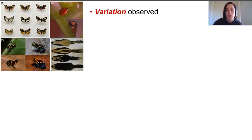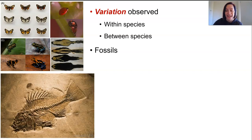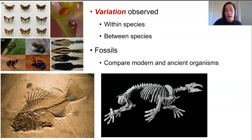Over time, scientists started to observe a greater range of species and see that there were huge numbers of similarities between species and also within species, so they began to wonder how this was all linked. More and more fossils were discovered containing animals and plants that were so different to modern species, while others from similar regions and time periods were surprisingly similar to modern species. Where did all these species actually come from, and where did they go?